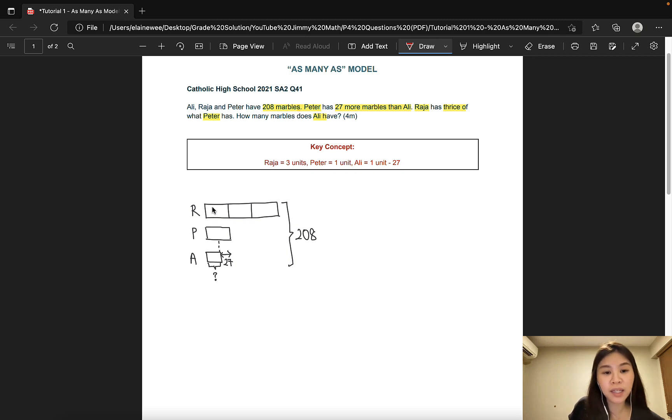From here, let's also identify the equal units, which is basically what Raja and Peter have. Now, looking at this model, it is clear that we have four equal units and one part here that is 27 less than one unit. In order to split these units up equally, we need to make Ali's part one full unit. And how do we do that? We simply add 27 such that he has one unit like Peter.